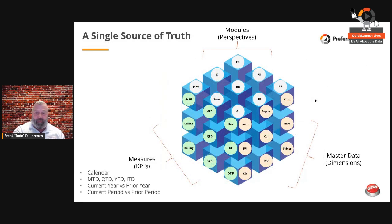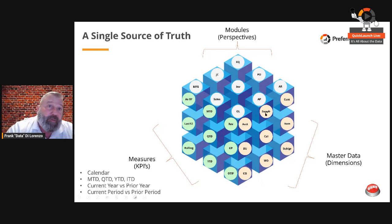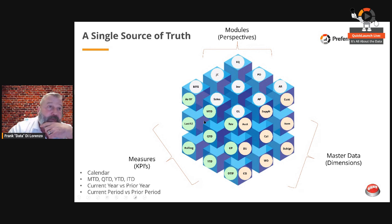This is really what we're after: modules, measures, and dimensions. In your ERP, you probably have a general ledger, AP, AR, equipment, job costs, manufacturing, sales — that's all the representative data in your ERP modules. Over here is how you want to measure that data: as of a date, last 12, rolling period, month-to-date, gross profit, revenue, and so forth. Then over here is how you want to slice and dice it — by GL account, customer or vendor, supplier, change order, business unit, or calendar. Having everything in one cube makes it much easier to create reports that pull from these modules, present with these measures, and slice and dice by these dimensions.